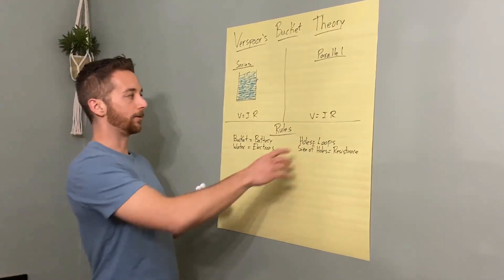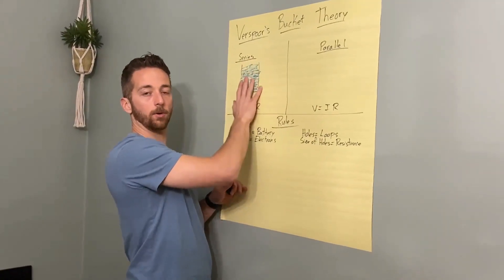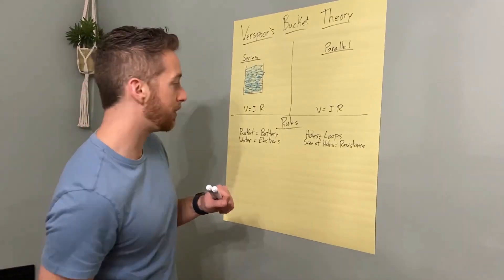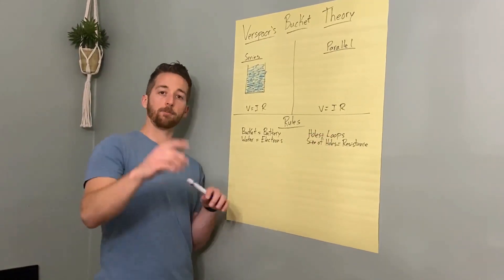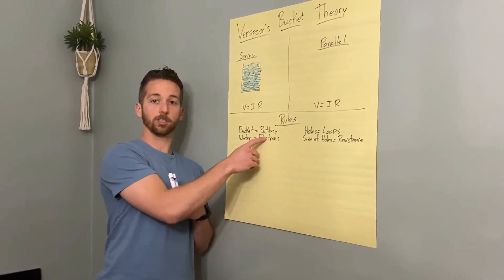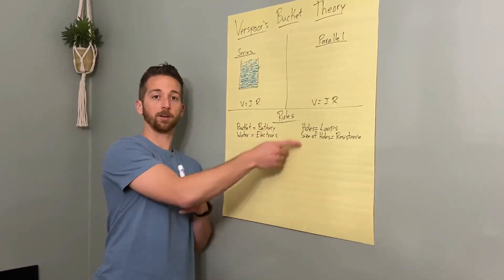There it is, beautiful. Now, bucket, no holes in the walls, water stays in it. What happens if you take a screwdriver, pierce the side? We have a hole. That represents a loop. Why? Because in a battery, the electrons need a loop to leave the battery and move.